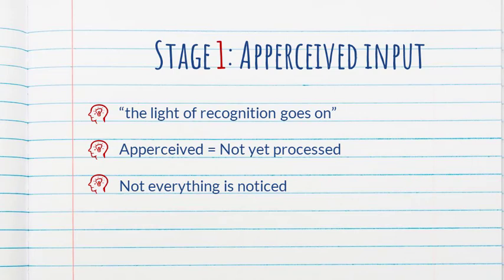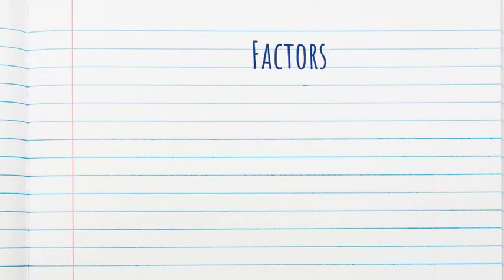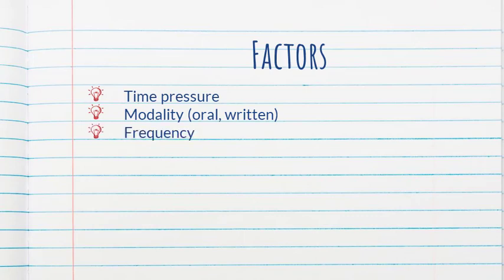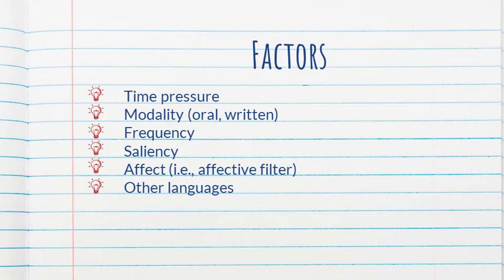And we can also probably agree that some things are noticed and others are not. Our brains cannot notice every single little detail from the input. What factors affect what is noticed and not noticed? Many. One of them could be time pressure, how much time we have to engage with the input, how the input is presented, for example, if it's oral versus written, the frequency of that particular form, how salient the form is. Affect can also play a role, and you may have heard of Krashen's affective filter. Knowledge of other languages can certainly influence what we notice or don't notice. Are there other factors? Yes.